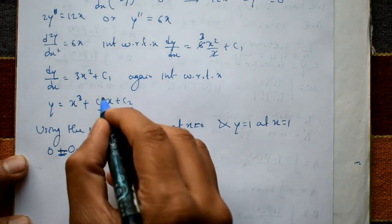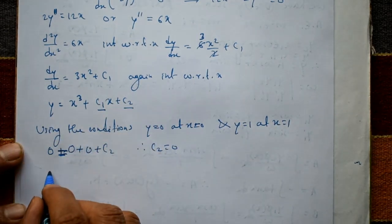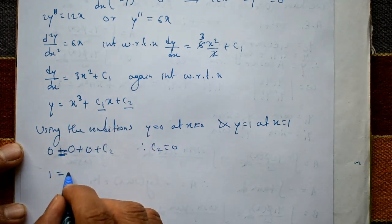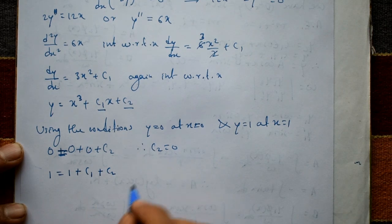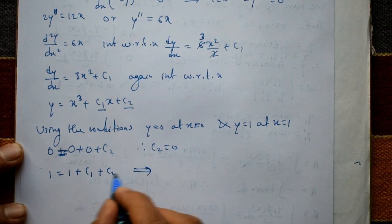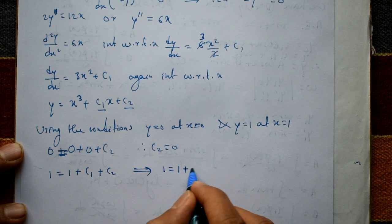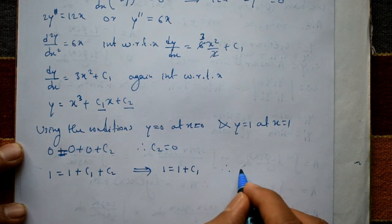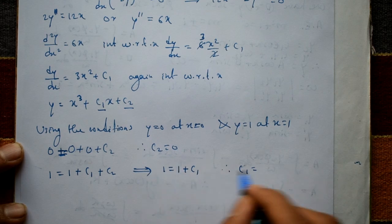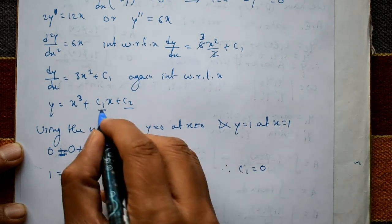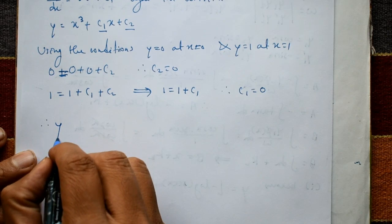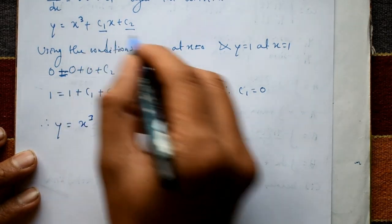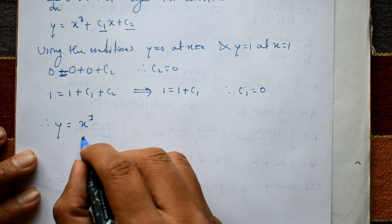Applying y = 1 when x = 1 gives 1 = 1³ + c₁(1) + c₂, which is 1 = 1 + c₁ + 0. Therefore c₁ = 1 - 1 = 0. With c₁ = 0 and c₂ = 0, substituting back gives the required solution: y = x³.